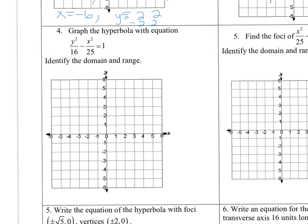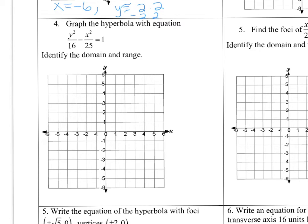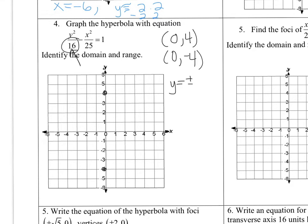For the next problem, graph the hyperbola and identify the domain and range. Since y squared is positive, this goes up and down. The vertices are at (0, 4) and (0, -4), found by taking the square root of 16. The asymptotes are y equals plus or minus the square root of 16 over the square root of 25, which simplifies to plus or minus four-fifths x. So go up 4, over 5 to plot the asymptote lines.